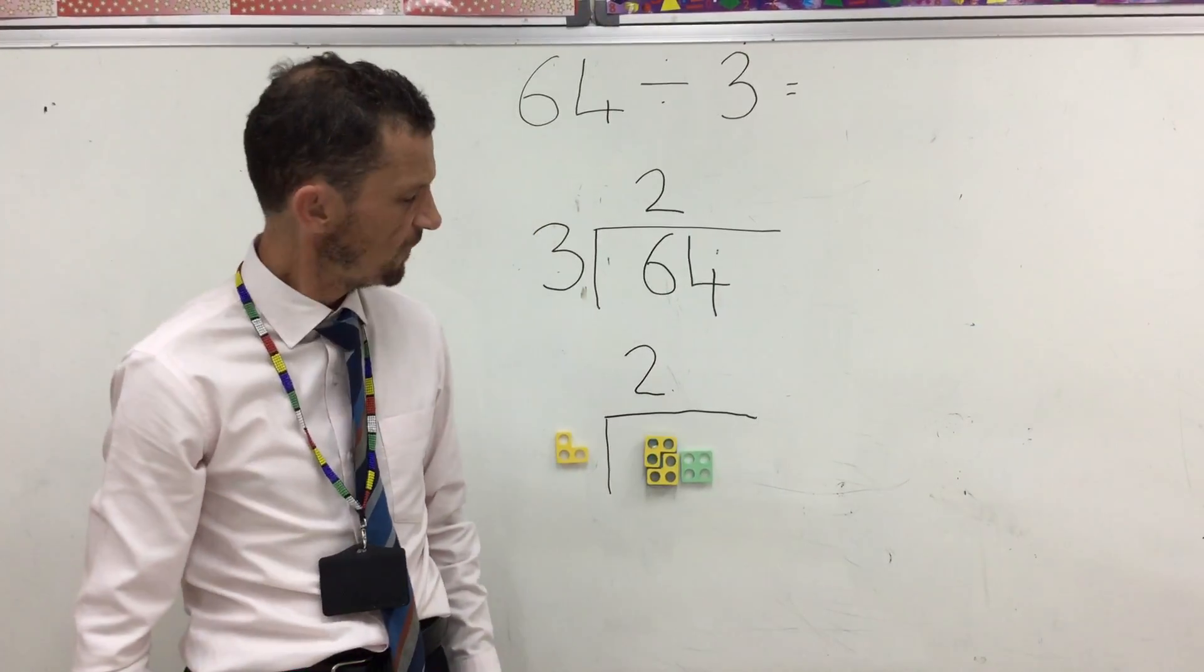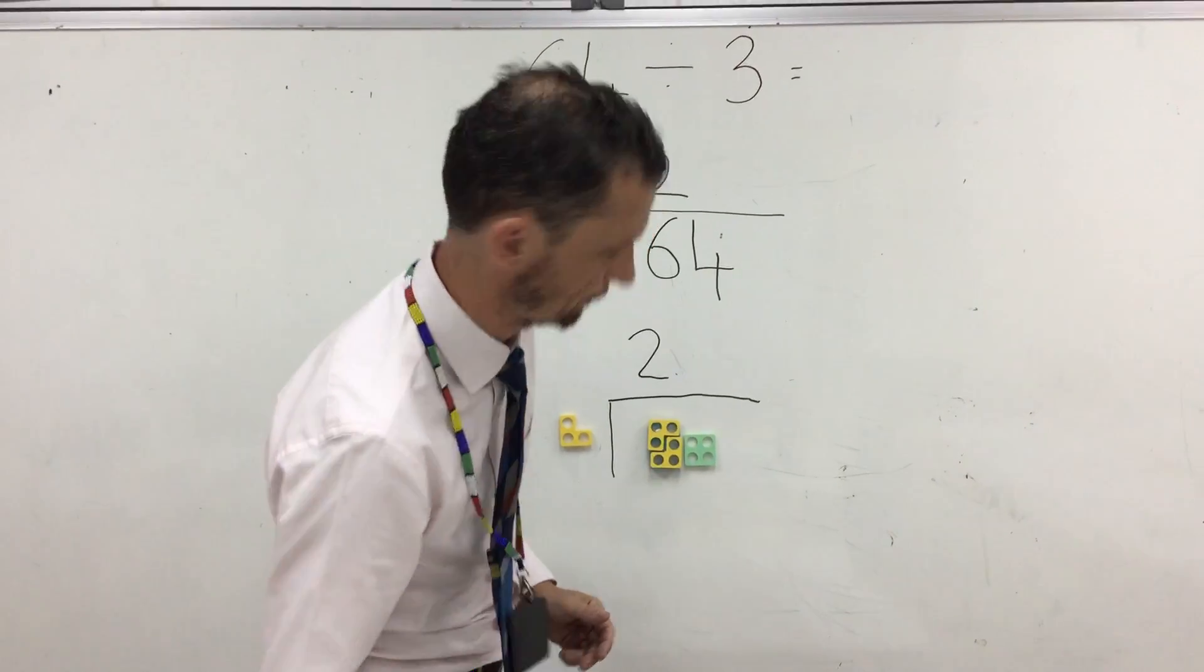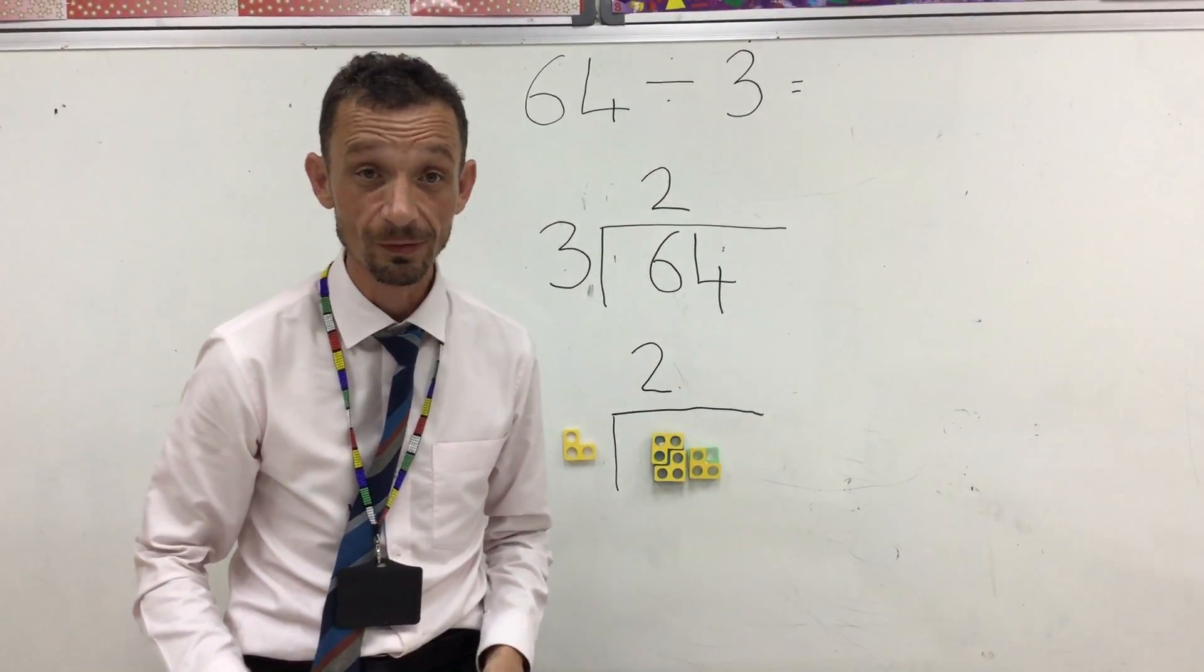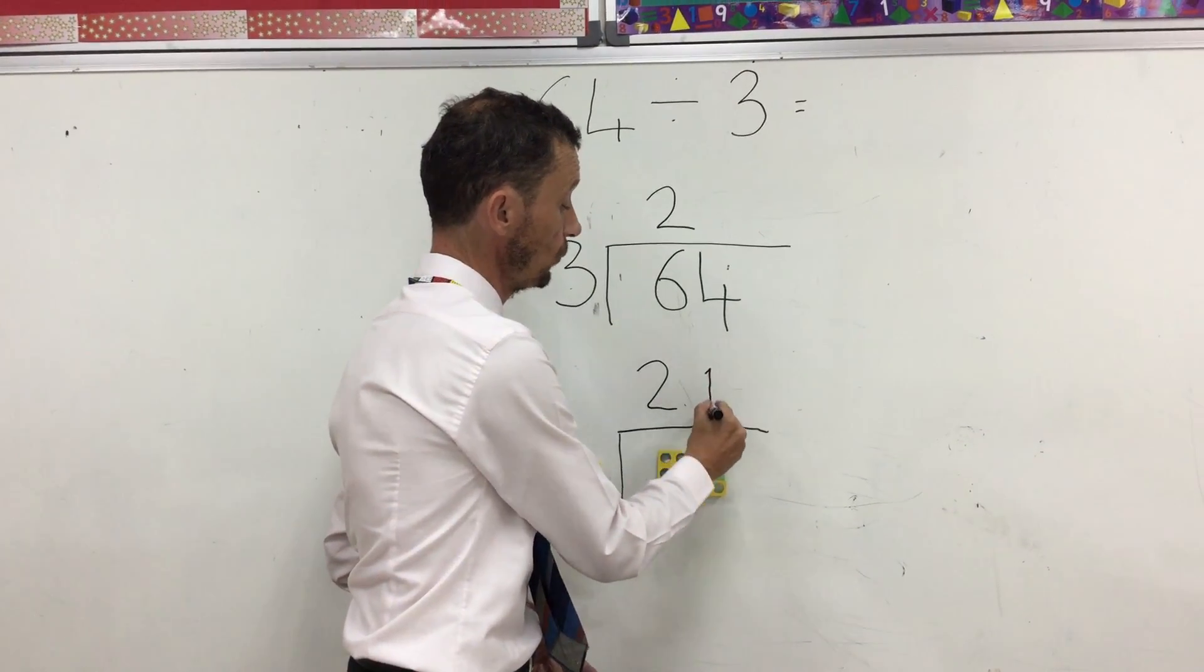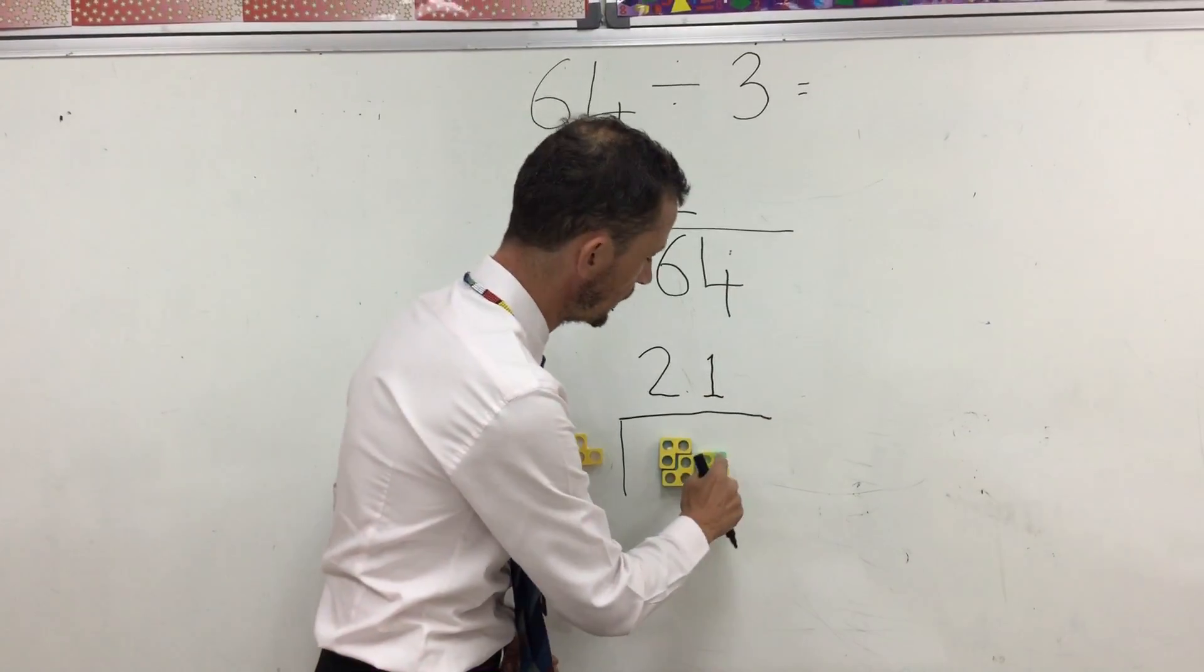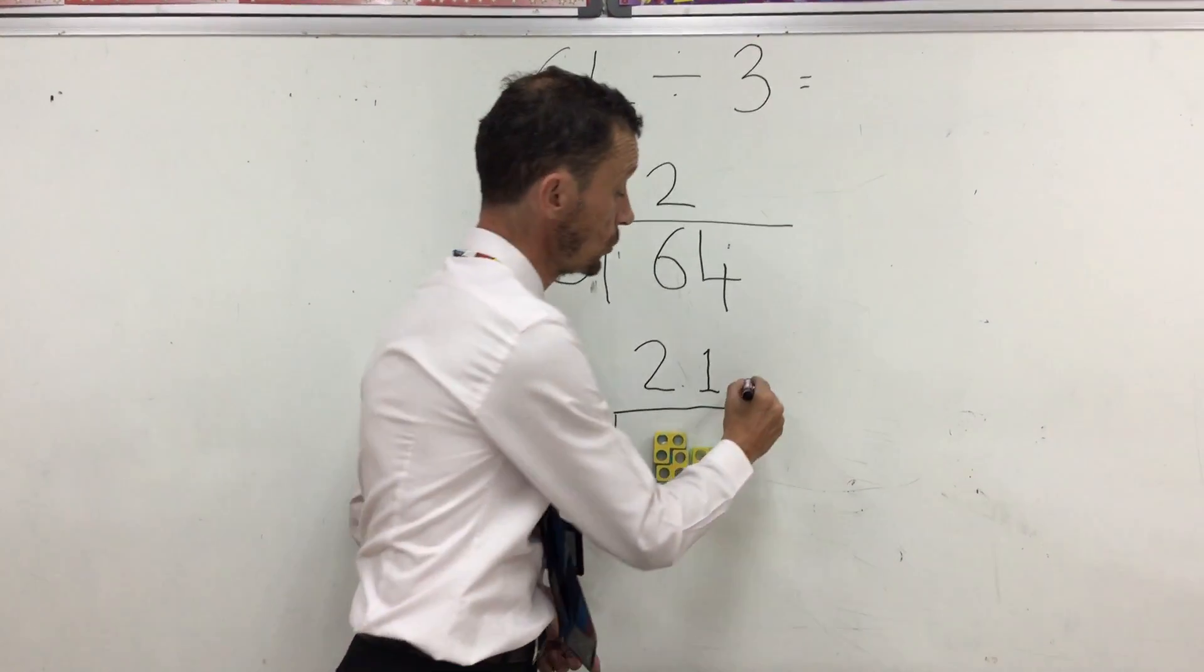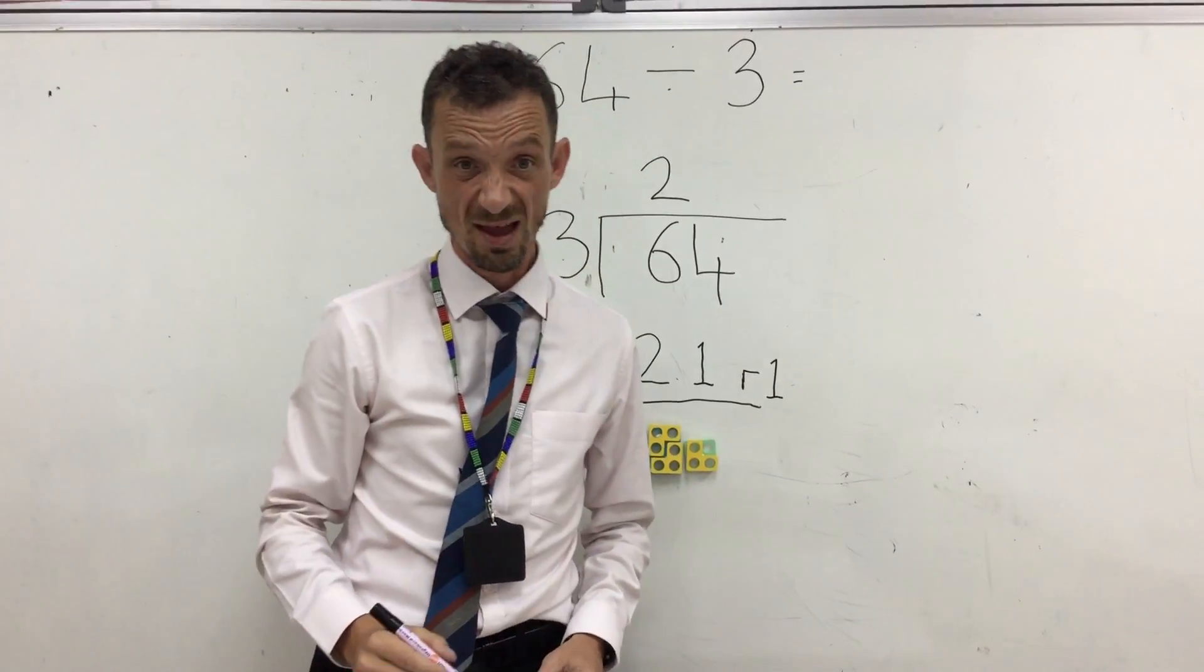Now, let's find out how many 3s go into 4. Oh no, it doesn't fit. I know what we'll do. One 3 has gone into 4. And how many are left over? 1 is left over. That's called a remainder. So we're going to write remainder 1. Does that help, Miss Helen?